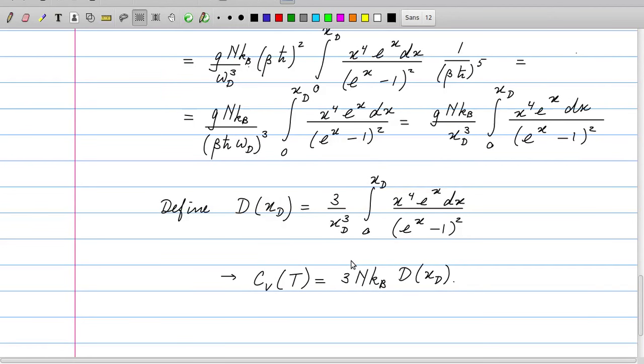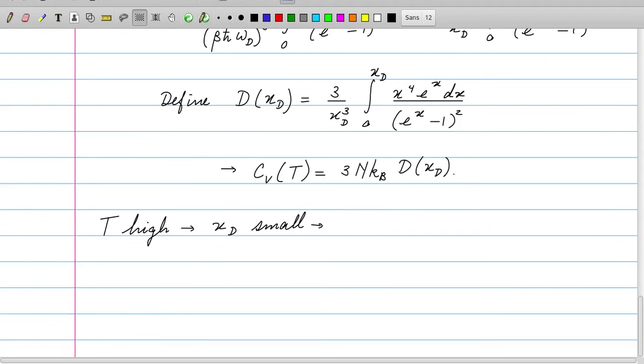Let us do the same analysis as in the Einstein solid. When T is high, which means that k_b T is a lot larger than h-bar omega, then the x_D occurring here is a small number. So what happens then to this integral? We can then work out the integral by just taking x to be small in the integrand.